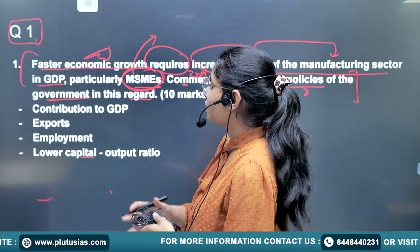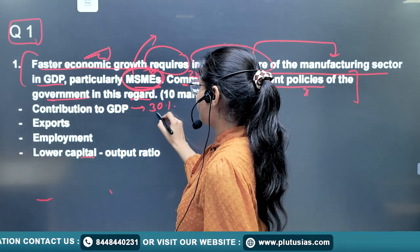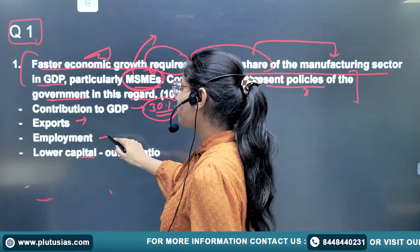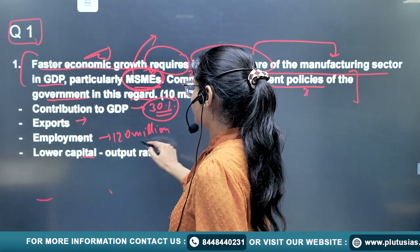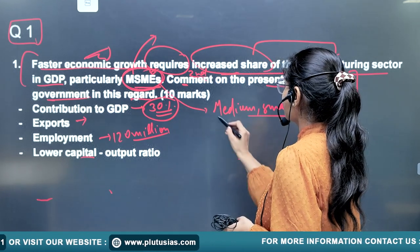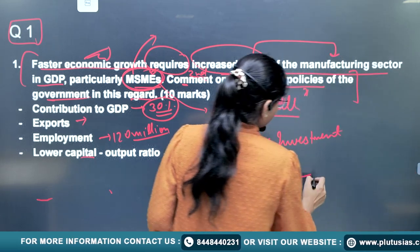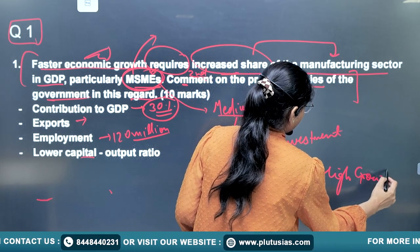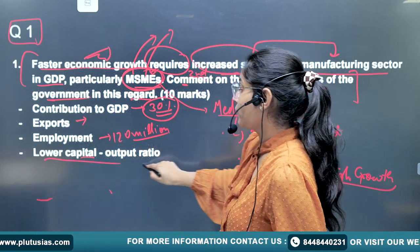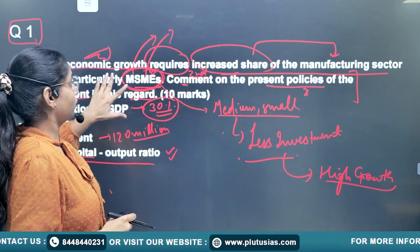For the answer, first establish the significance of MSMEs: they contribute around 30% to GDP, around 40% to exports, and employ approximately 120 million people. Since medium and small industries require less investment, with less investment we can achieve high growth. Moreover, MSMEs are labor-intensive rather than capital-intensive, providing a lower capital-output ratio.